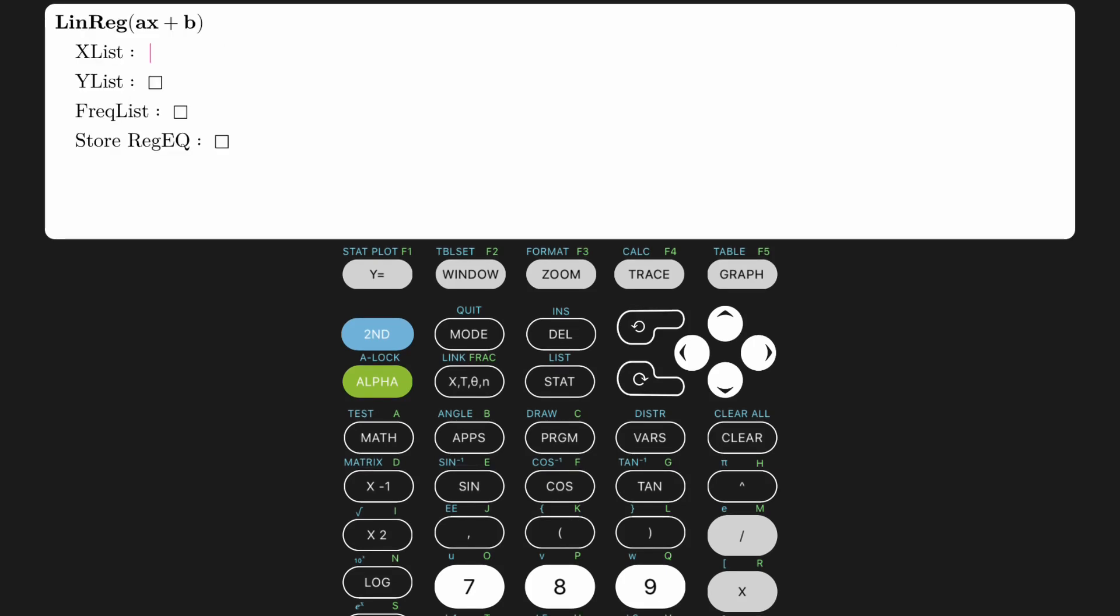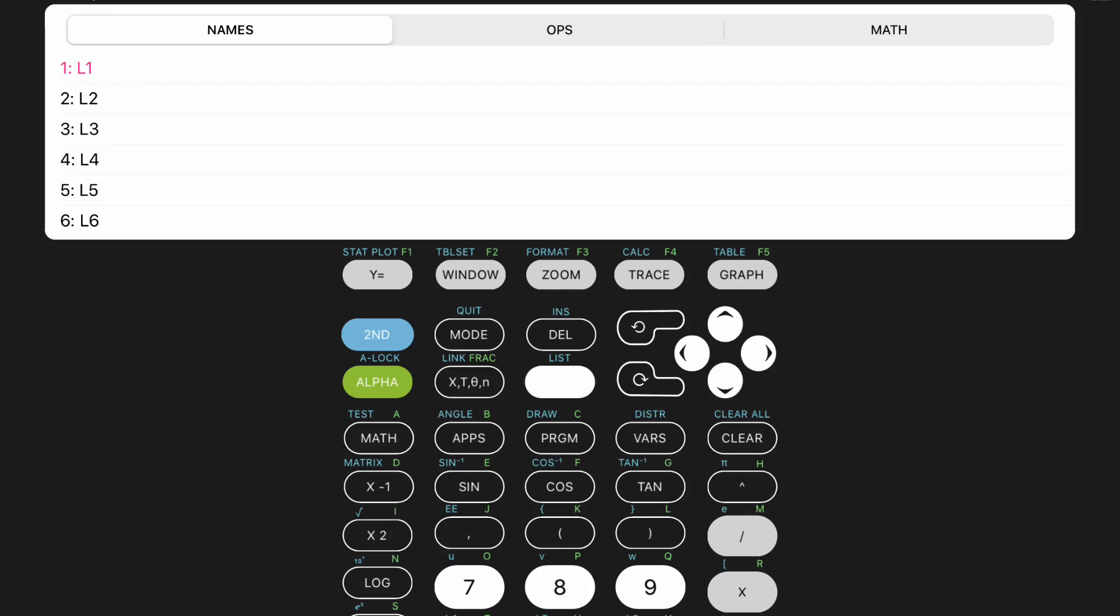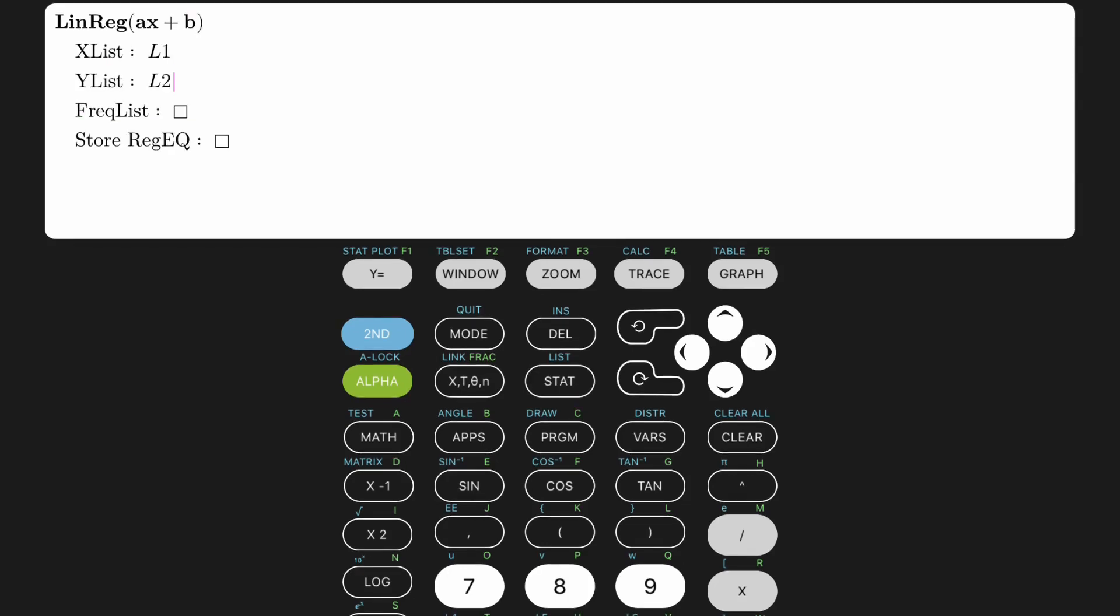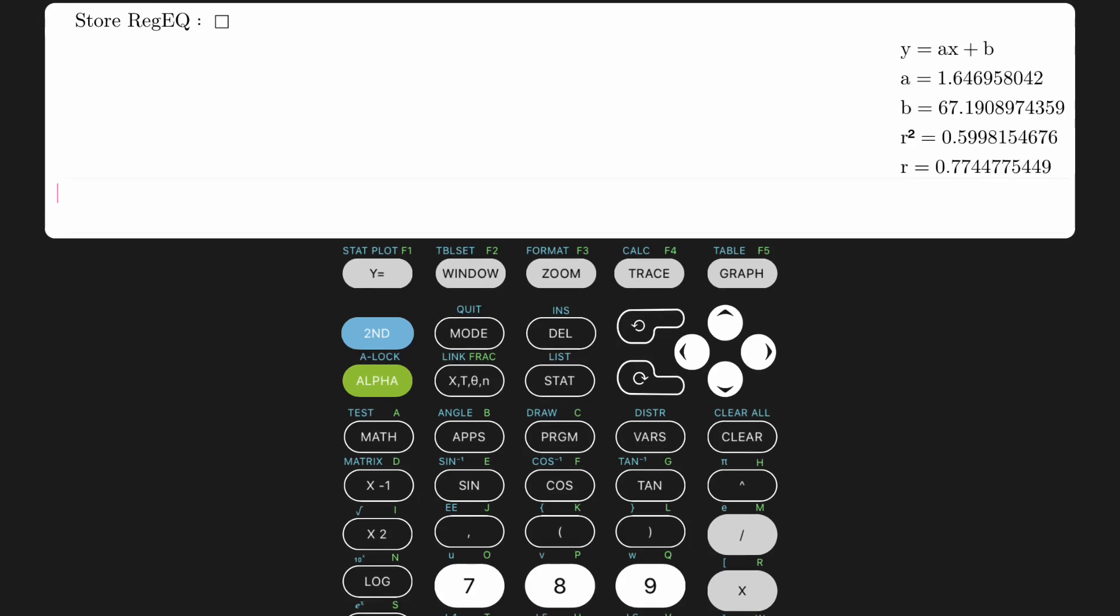Go ahead and click the Enter button to bring up the home screen. You will need to set the X values to List 1 and the Y values to List 2, so you can click Second, then List, to assign L1 and L2. Now you can click Enter once more to get your results.